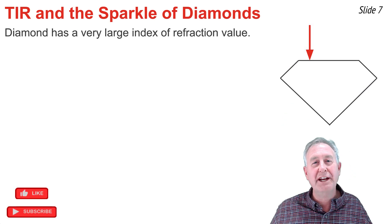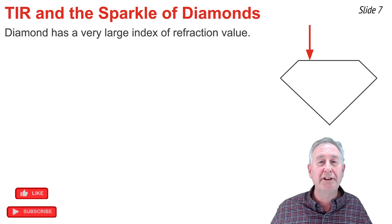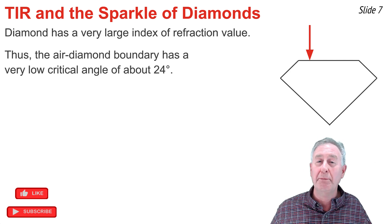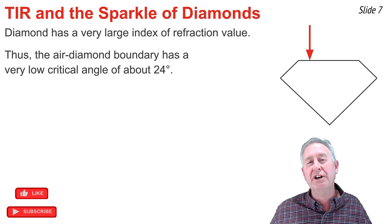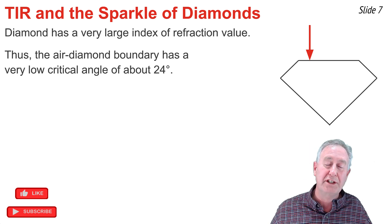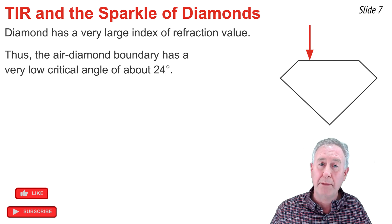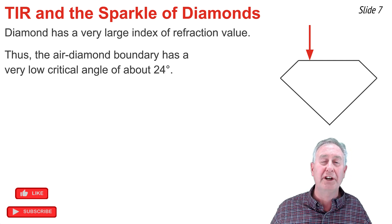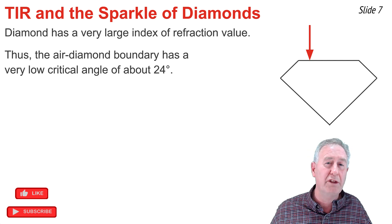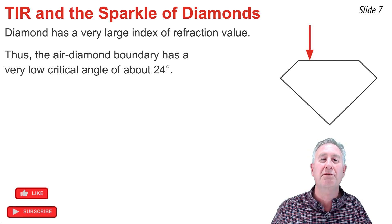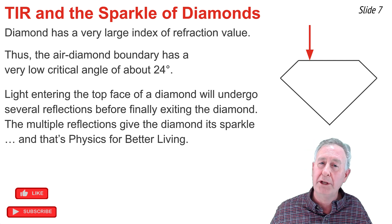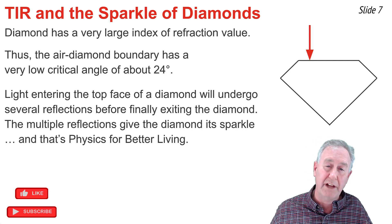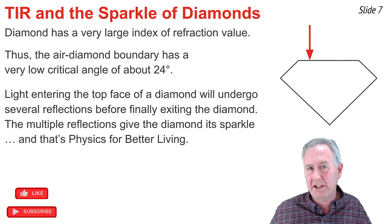The index of refraction of diamond is relatively large at 2.42, which means the critical angle for the diamond-to-air boundary is relatively low at 24 degrees. When you consider all possible angles of incidence — between 0 and 90 degrees — the overwhelming majority are greater than the 24-degree critical angle. This means that when light enters a diamond gemstone, it will often undergo several reflections before finally exiting.